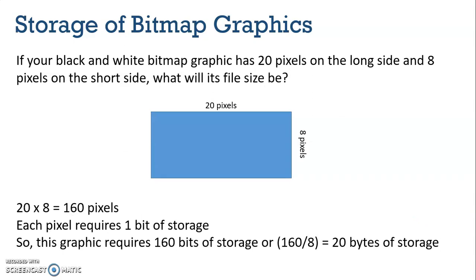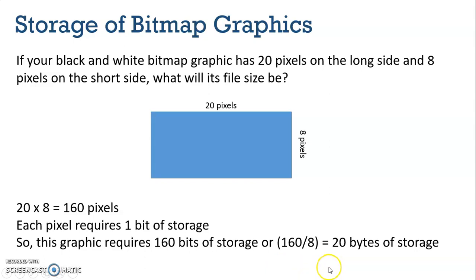If your black and white bitmap graphic had 20 pixels on the long side and 8 pixels on the short side, what would the file size be? Simply multiply 20 by 8, which gives us a grid of 160 pixels. Each pixel requires one bit of storage, so the graphic requires 160 bits, and if we divide by 8 there are 8 bits in a byte, giving us 20 bytes of storage. So this graphic with a grid of 20 by 8 will require either 160 bits or 20 bytes of storage.